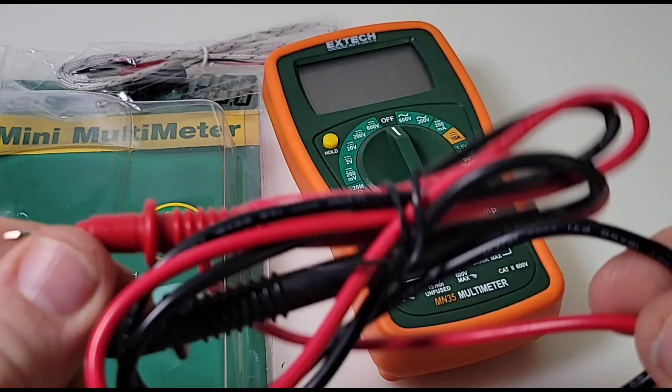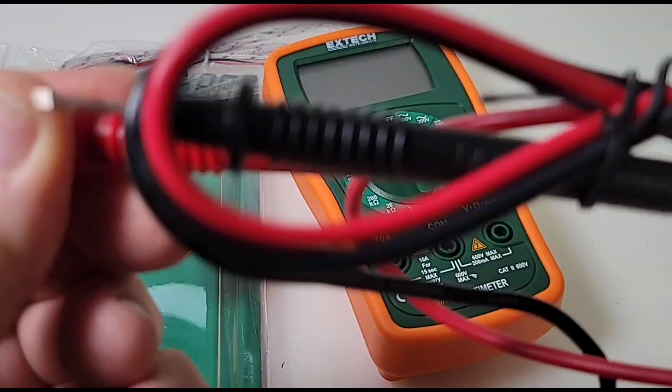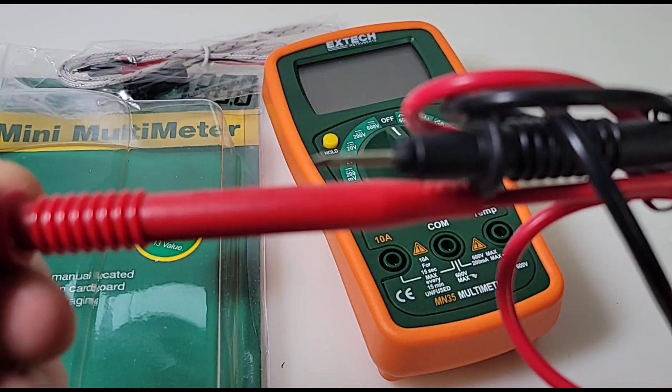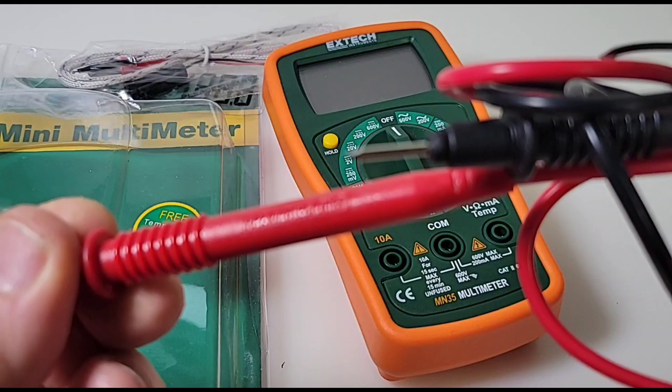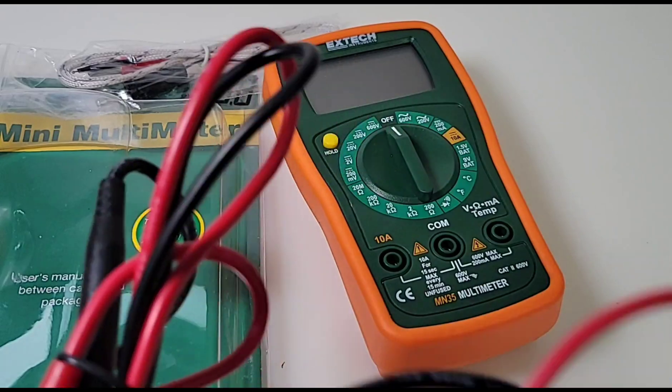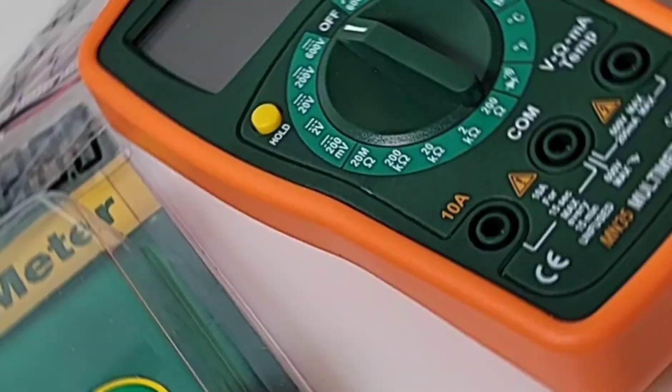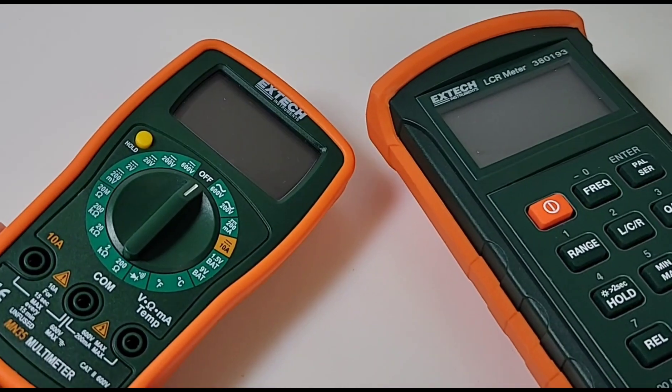What else do you get? You get your test probes. These are standard test probes, nothing fancy going on here. They don't have the Extech branding either. No Extech branding on the test leads, rated for a maximum 10 amps, 1000 volts Cat 2. Sort of run in the middle kind of stuff, but definitely fine for your everyday home use.